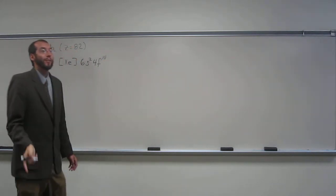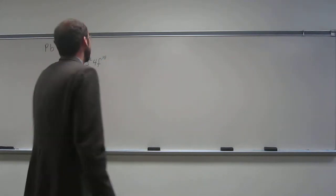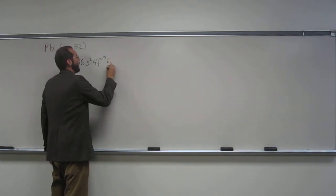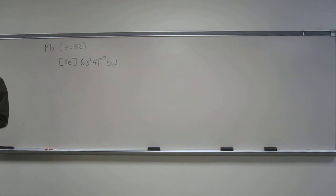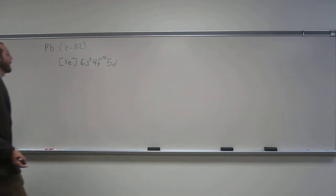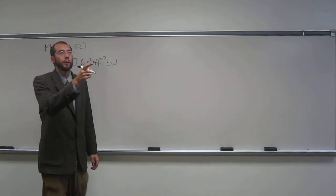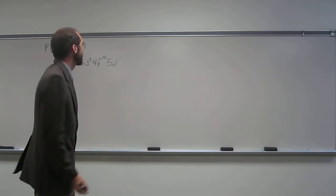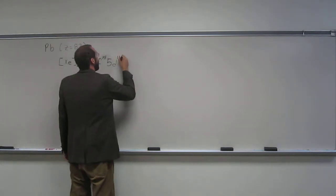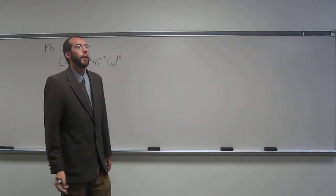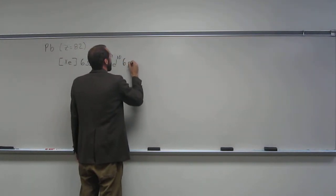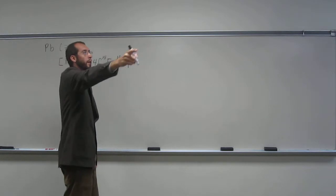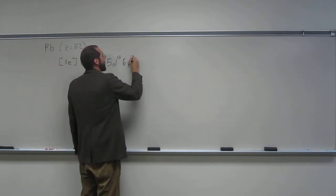And then, after that, you've got the d shield, but that's the 5d. So I guess this problem is good in some ways, so you can know how to label these things. And if you count those, there's 10 of those. And then, it's in the p block, so it's the 6p, because it's on period 6, and there's two of them.